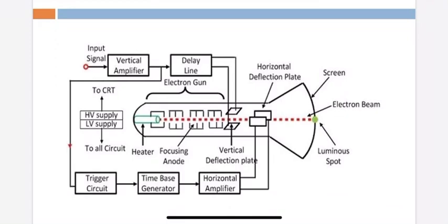Next is the horizontal deflection system. The first block is the trigger circuit. The trigger circuit triggers the time-base generator to generate a sawtooth waveform. So the time-base generator generates the sawtooth waveform.